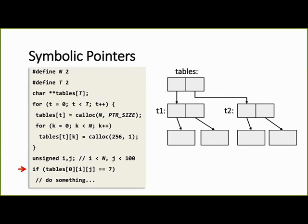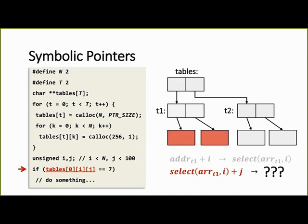When we reach this branch where we access the first table with a symbolic offset i, the reference pointer will be this symbolic expression, which in this case points only to the first table t1. Next, when we access with a symbolic offset j, the reference pointer will be this symbolic expression, which in this case points to two objects marked in red.